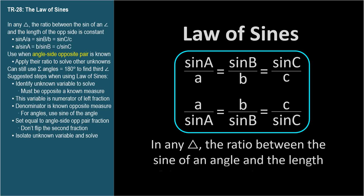And these equalities are the law of sines. In any triangle, the ratio between the sine of an angle and the length of the opposite side is constant.